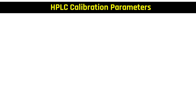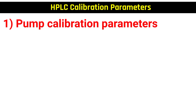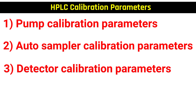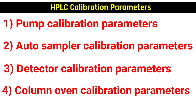HPLC calibration parameters are basically four types: number one, pump calibration parameter; number two, autosampler calibration parameter; number three, detector calibration parameter; and number four, column oven calibration parameter.